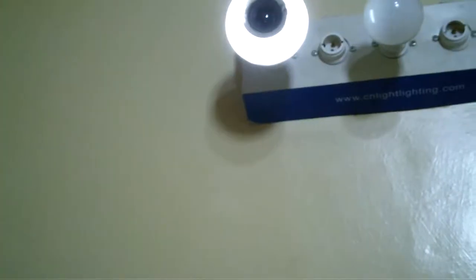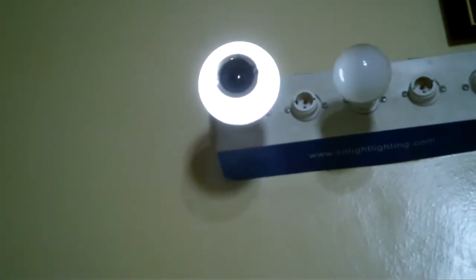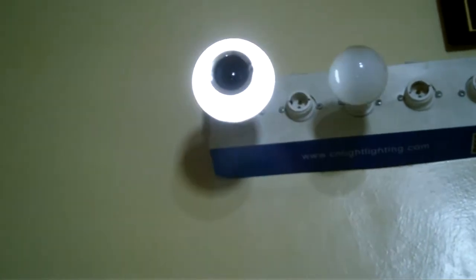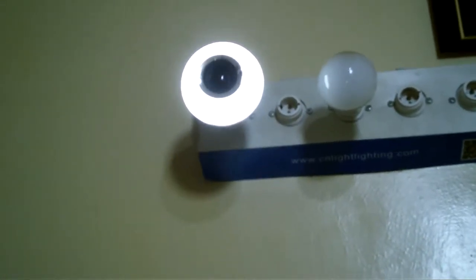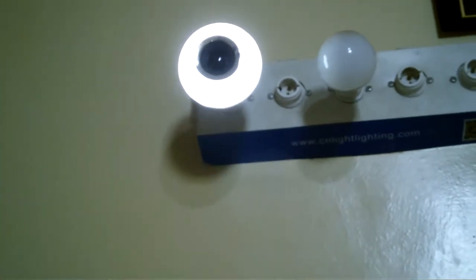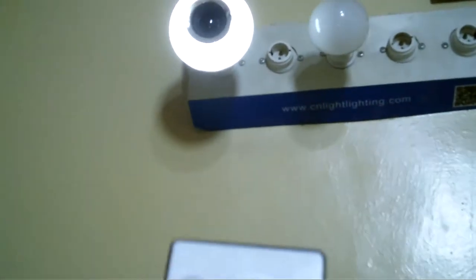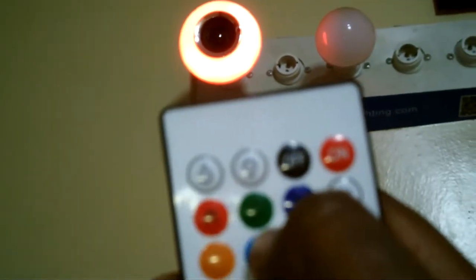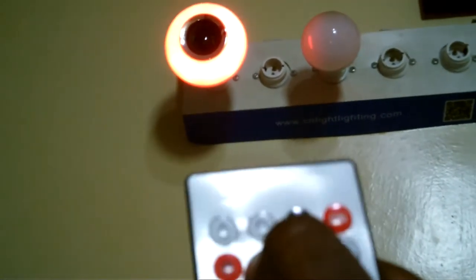Let's see warm white. That is bright white, that is warm white. I don't know whether you can see the difference. Then you can change that to red. As you can see that is red. This is green, you can change that to green.